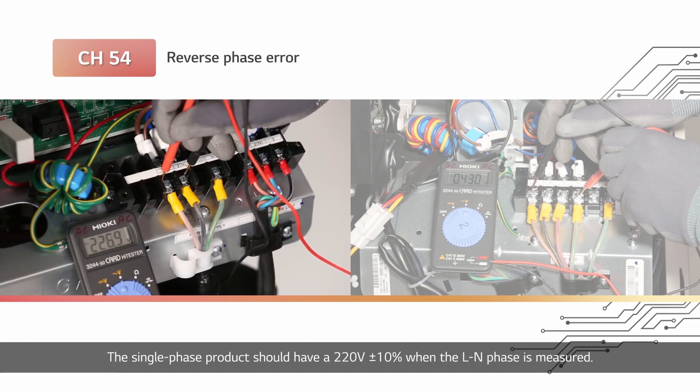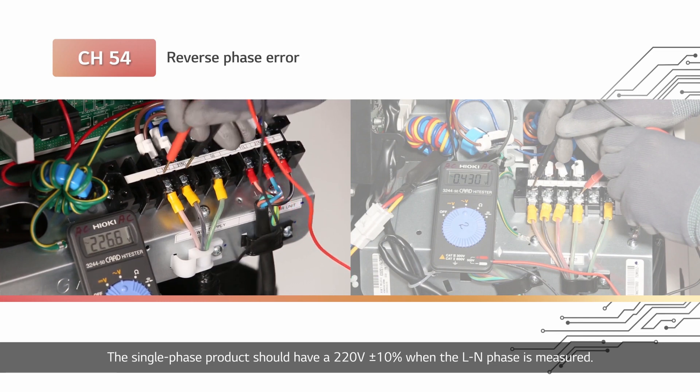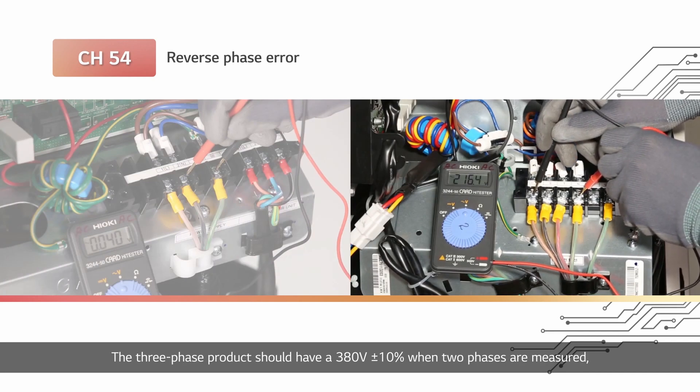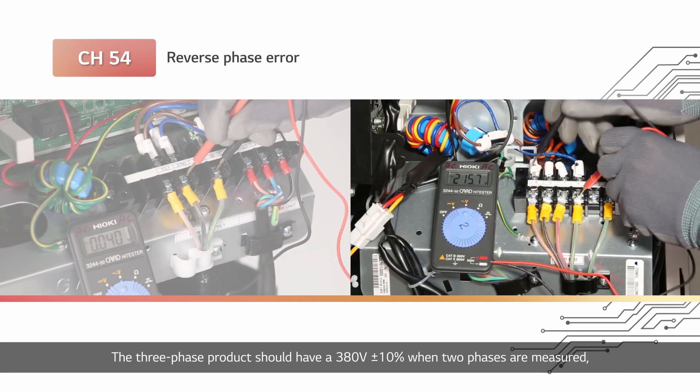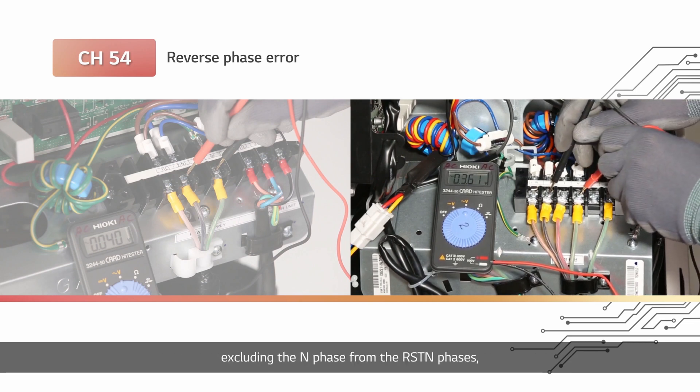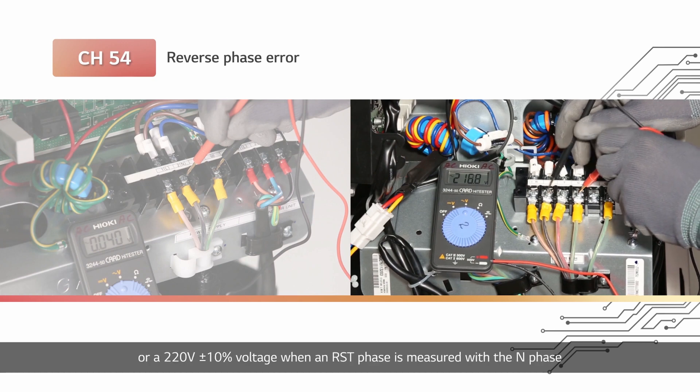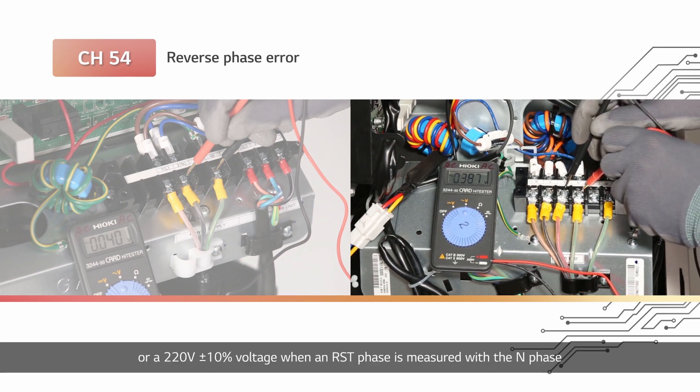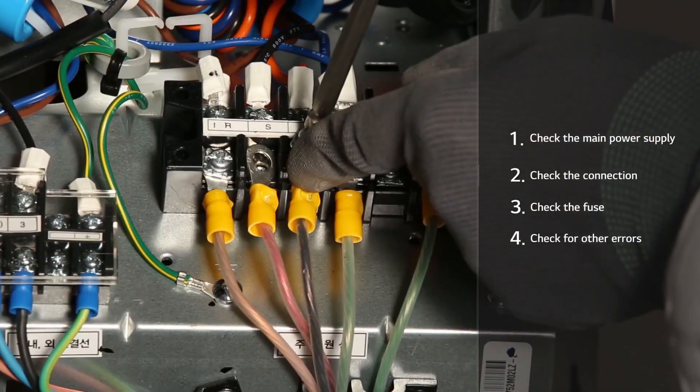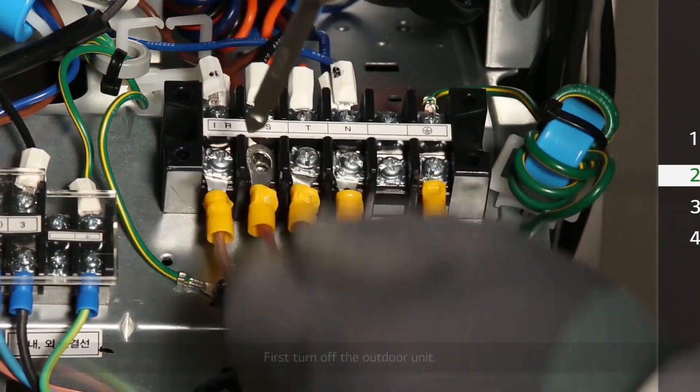The single phase product should have 220 volt ±10% when the LN phase is measured. The three-phase product should have 380 volt ±10% when two phases are measured excluding the N phase from the RST phases, or 220 volt ±10% when an RST phase is measured with the N phase.